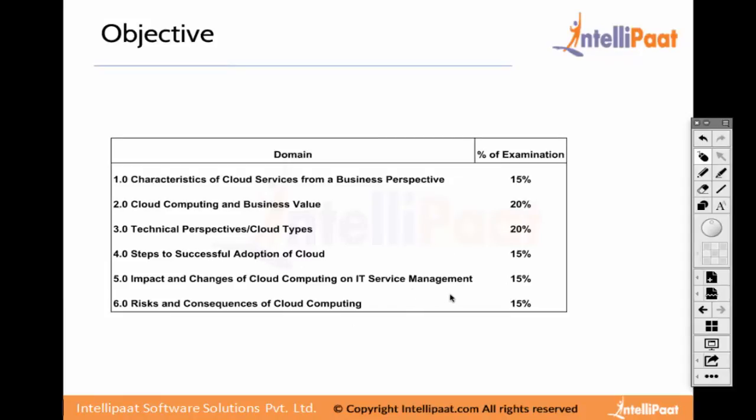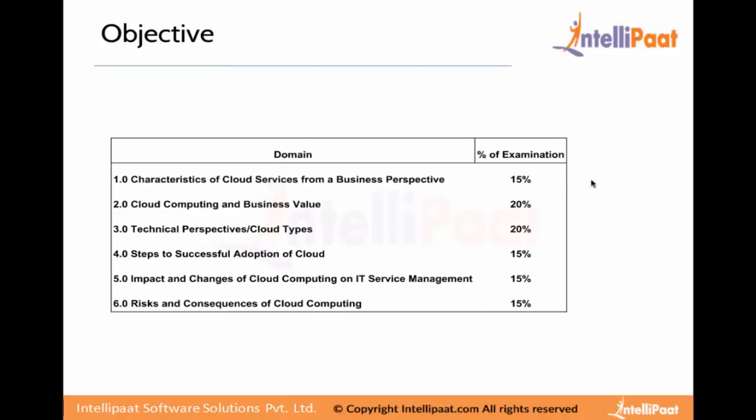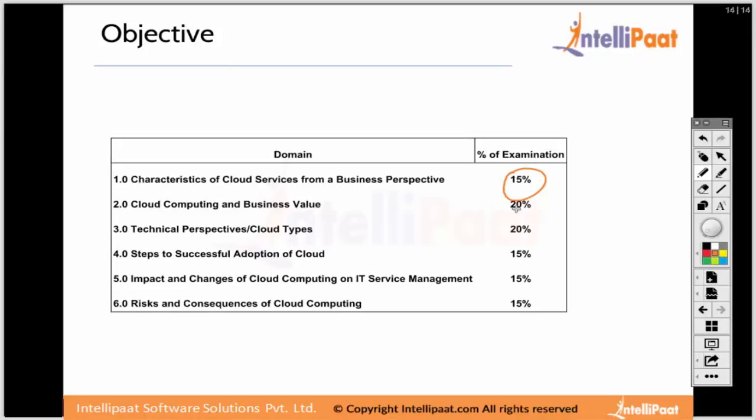So here are the domains as prescribed by CompTIA, and on the right side we have percentage weighted per domain. So 15% for domain one, 20%, and so on. What are these? Characteristics of cloud services from a business perspective—the keyword is business perspective. Cloud computing and business value: how is this new architecture impacting your business value, adding on to it and changing the paradigms. Technical perspective and cloud types.